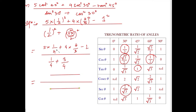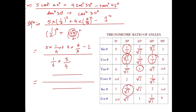Now computing: 5/4 plus 16/3 minus 1. Taking LCM of 4 and 3, which is 12. So: 5×3 = 15, giving 15/12; and 16×4 = 64, giving 64/12.